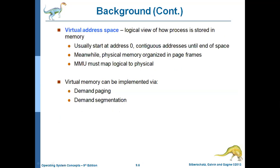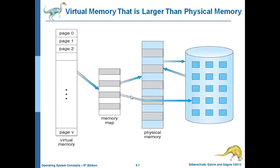Less I/O is needed to load and swap processes. The virtual address space is the logical view of how a process is stored in memory — it usually starts at address zero with contiguous addresses. Physical memory, meanwhile, is organized in page frames. The Memory Management Unit (MMU) must map logical to physical addresses. Virtual memory can be implemented via two things: demand paging and demand segmentation.